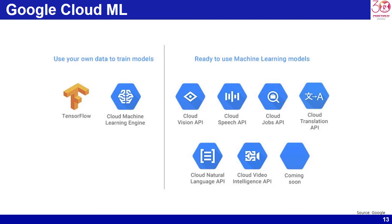Google Machine Learning Engine combines the managed infrastructure of Google Cloud Platform with the power and flexibility of TensorFlow. It mainly does two things: one, it enables you to train machine learning models at scale by running TensorFlow training applications in the cloud; and two, it hosts those trained models for you in the cloud so that you can use them to get predictions about new data.